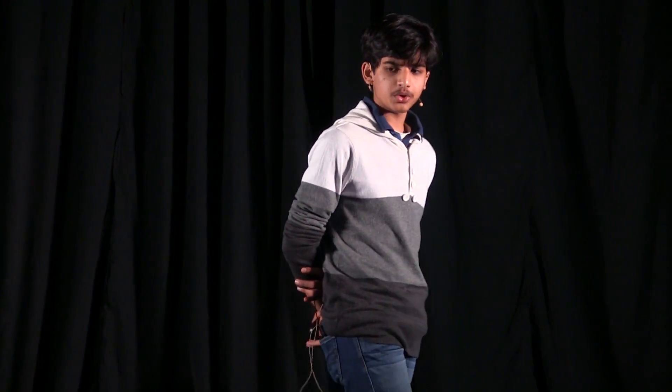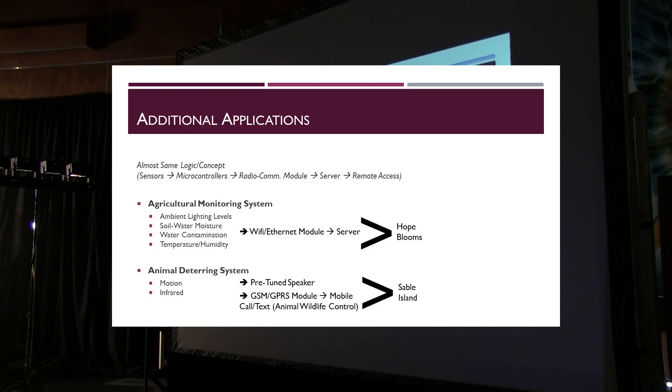Meanwhile, I've found additional applications to the system that use almost the same logic — sensors to a microcontroller to a radio module to another radio module, transferring data to a server that can be viewed remotely. One of those applications is an agricultural monitoring system that monitors the health of a greenhouse and allows for remotely monitoring and manipulating parameters such as lighting levels, water contamination, soil moisture, temperature, and humidity. I'm trying to get this implemented at the greenhouse at Hope Looms.